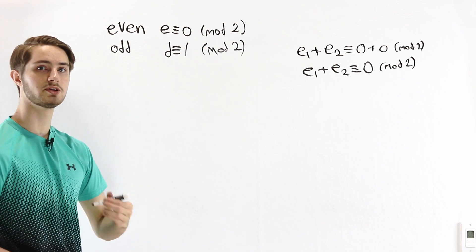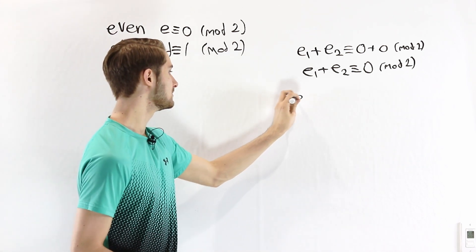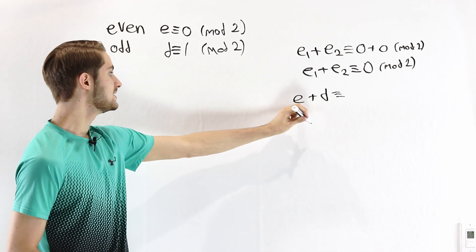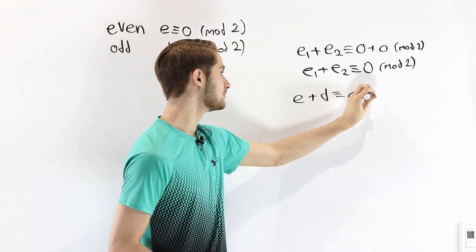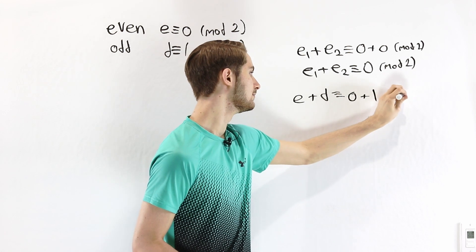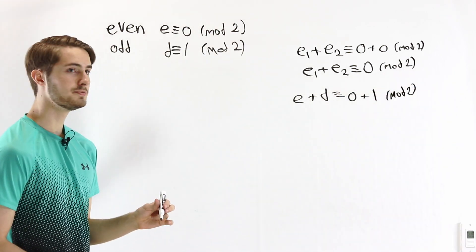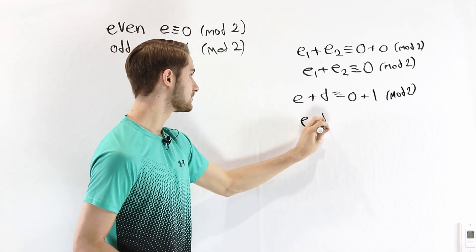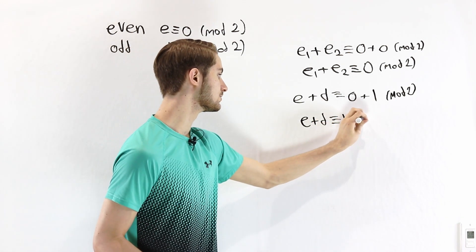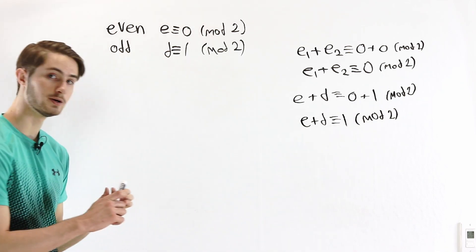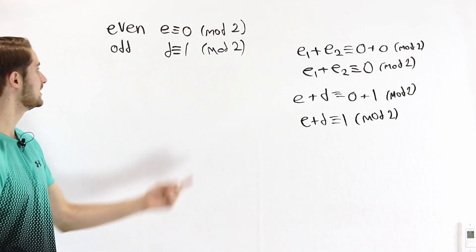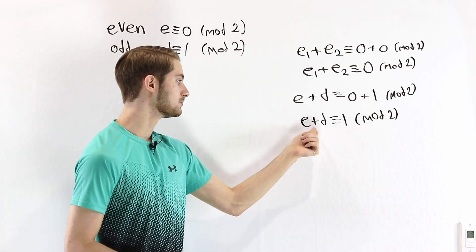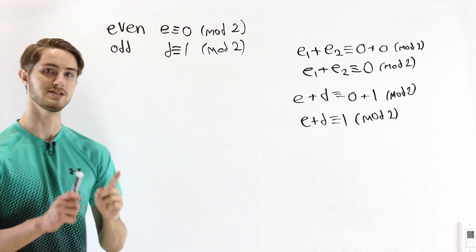Next, let's look at an even plus an odd number. An even number is congruent to 0, and an odd number is congruent to 1 mod 2. So on the right side we have 0 plus 1, meaning an even number plus an odd number is congruent to 1 mod 2. Since a number congruent to 1 is odd, an even number plus an odd number will always be odd.